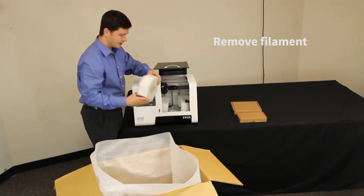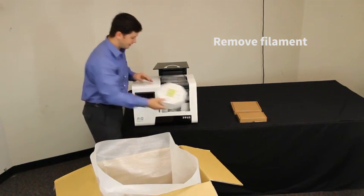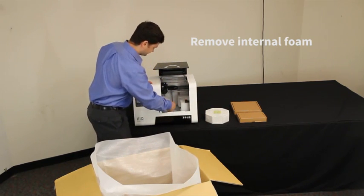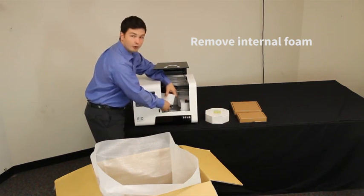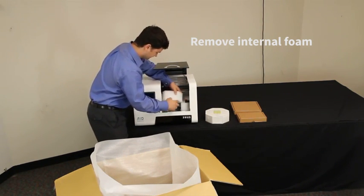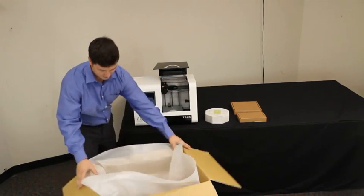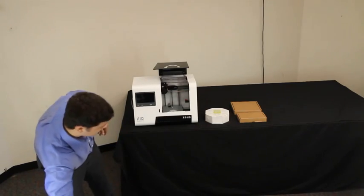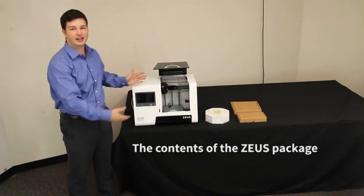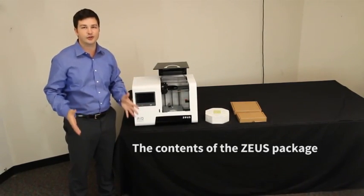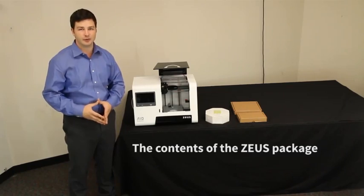So this one here is one spool of premium white filament. And there's some more foam inside the machine for protection. And here you can see the content of the Zeus shipment that you will receive with the Zeus package.